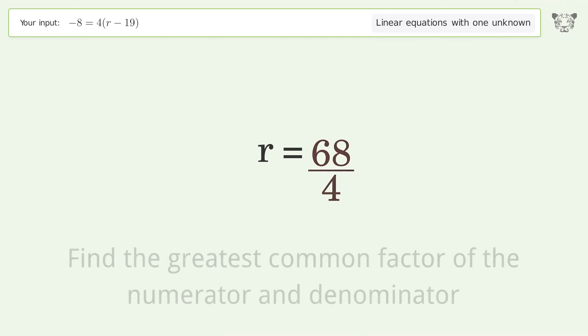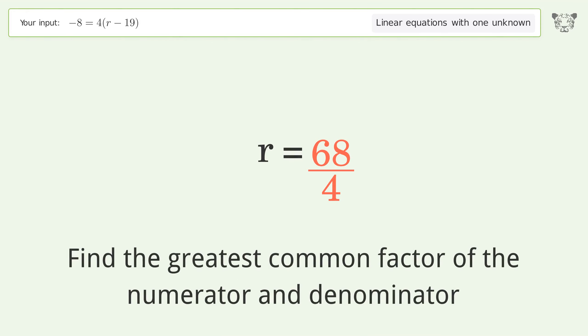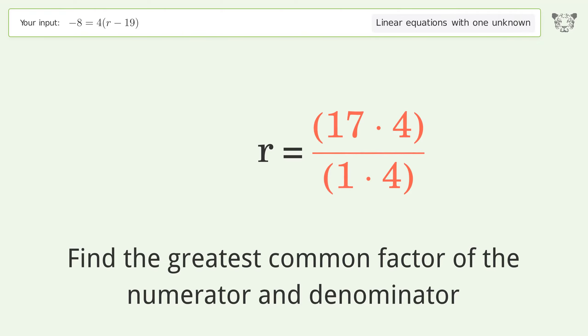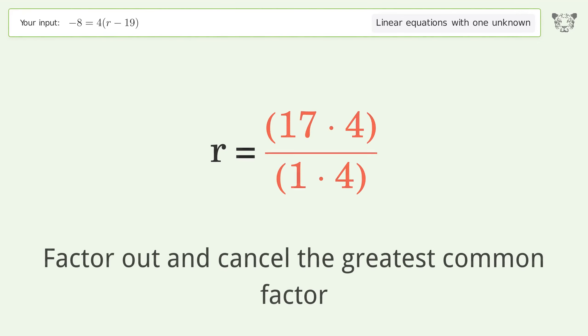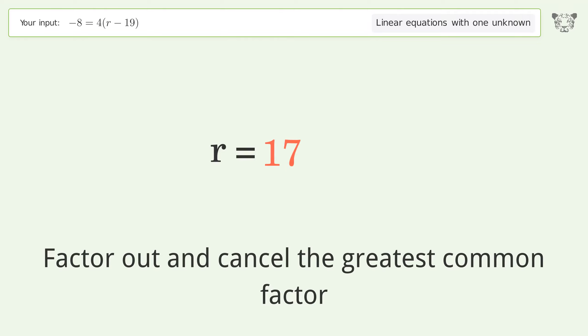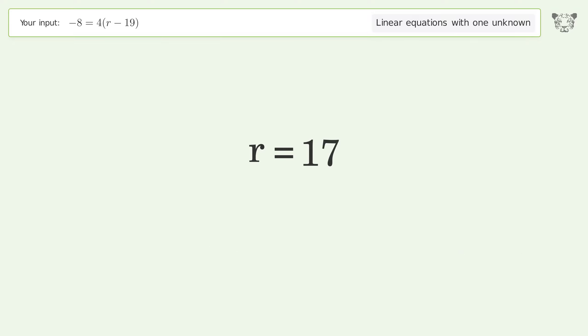Find the greatest common factor of the numerator and denominator, then factor out and cancel the greatest common factor. And so the final result is r equals 17.